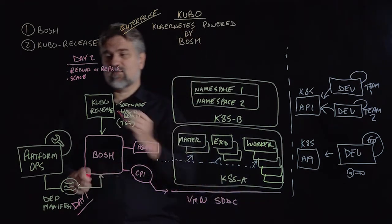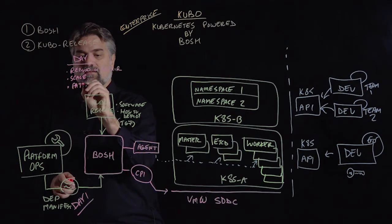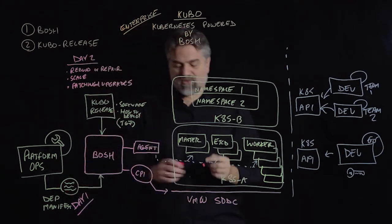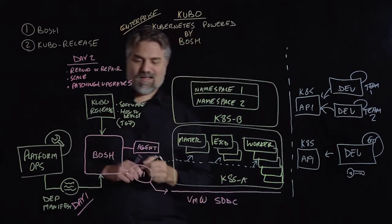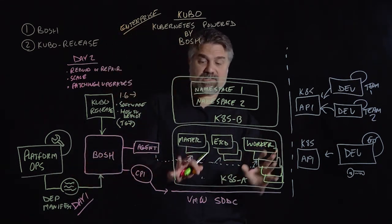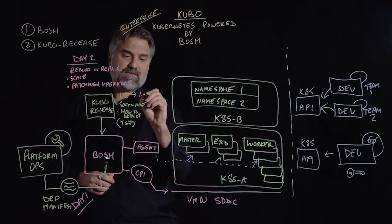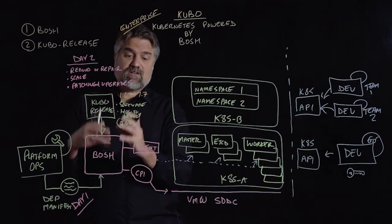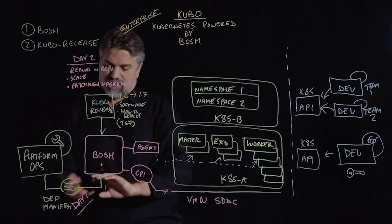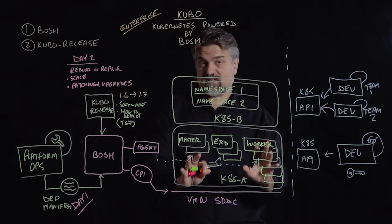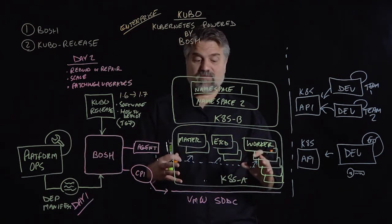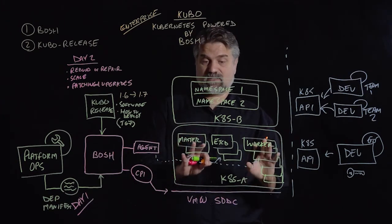Another day two operation is patching and upgrading. For example, if we deployed our K8s cluster using Kubo release version 1.6 and want to upgrade to 1.7, we can simply pull down the Kubo release for 1.7 — it has all the new software and instructions on how to deploy and configure it — update our manifests, and merge the new 1.7 release with our deployment manifests. BOSH can then upgrade the Kubernetes instance in place with no downtime. This is a huge operational benefit — patching for CVEs and upgrading for new features without tearing down applications running inside the K8s clusters.